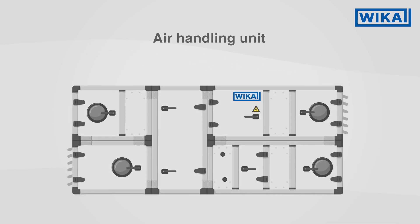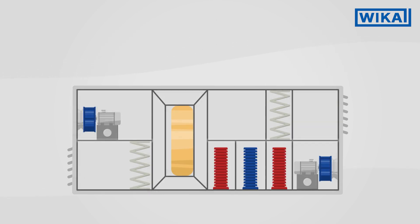Ventilation and air conditioning equipment, also known as air handling units, ensure that rooms are adequately ventilated and the air quality inside is improved. For this purpose, air is channeled from the outside into the inside of the building.